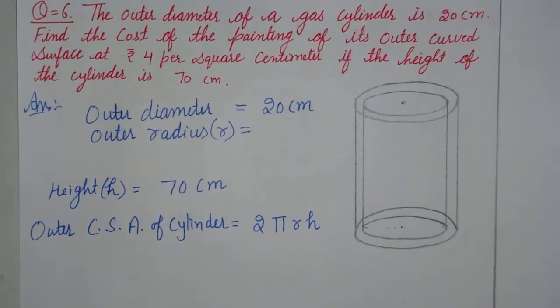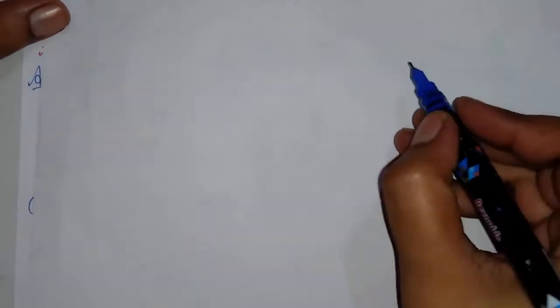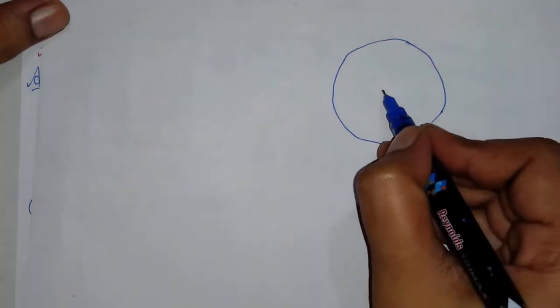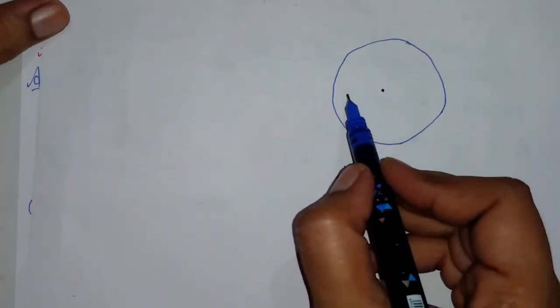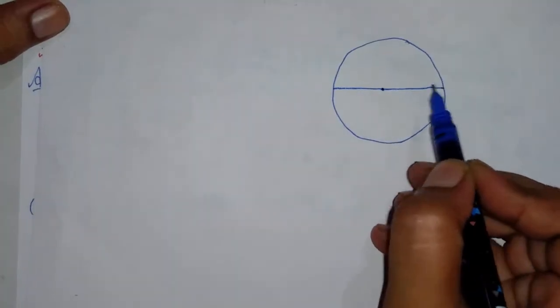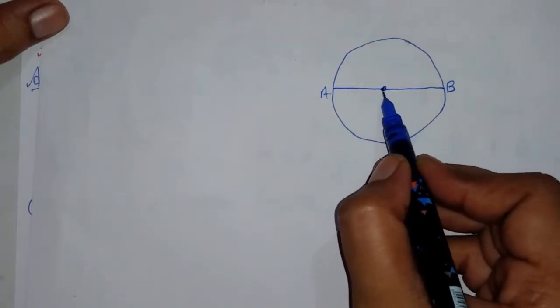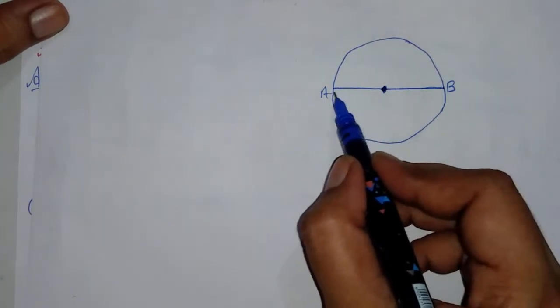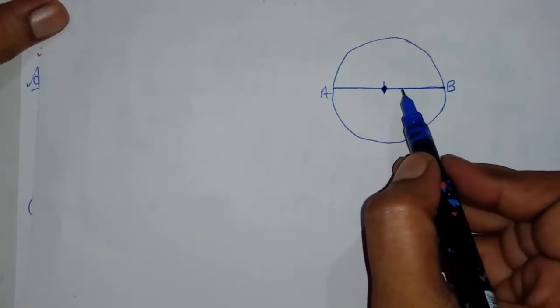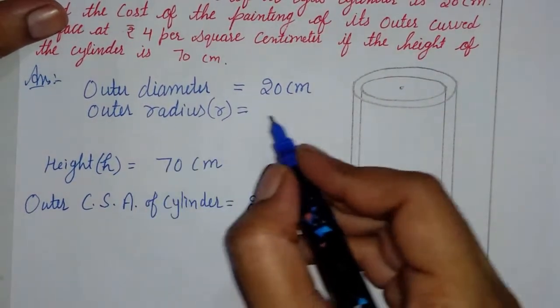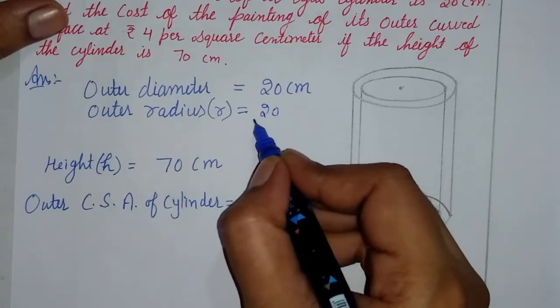I will tell you once again. If you have a circle, this is the center of the circle. The diameter appears going through the center. If you look from the center to the edge, that is the radius. So if I find the radius, radius equals diameter divided by 2. The diameter of the circle is 20, so the radius equals 20 divided by 2, which equals 10 centimeters.